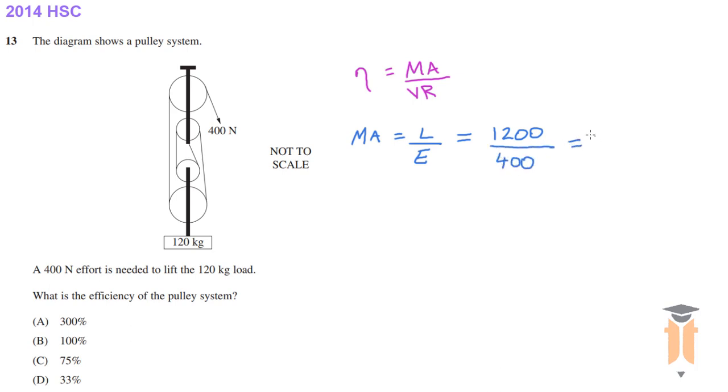Now to calculate the velocity ratio, we look at the number of ropes supporting the load. In this case we can see there's one here, another one there, another one there, and another one there.